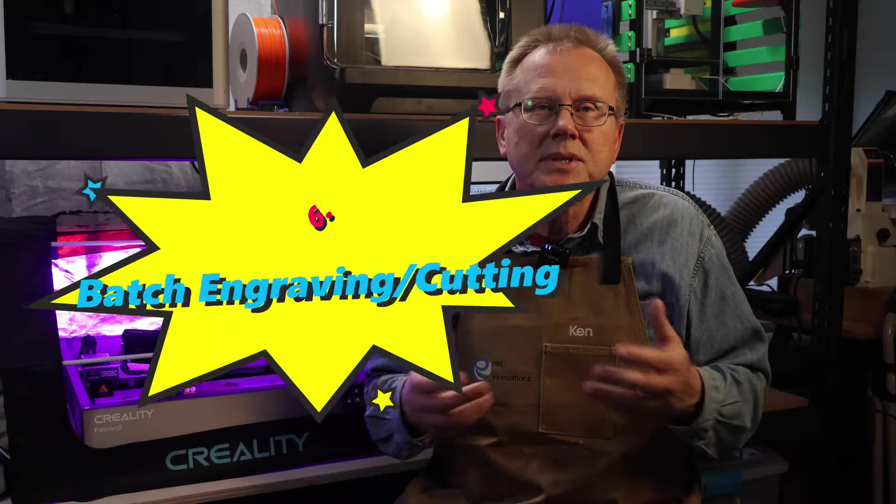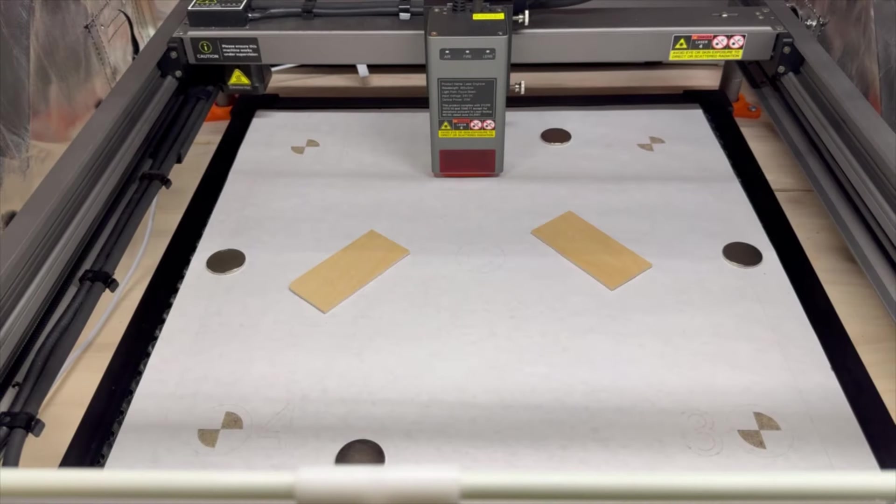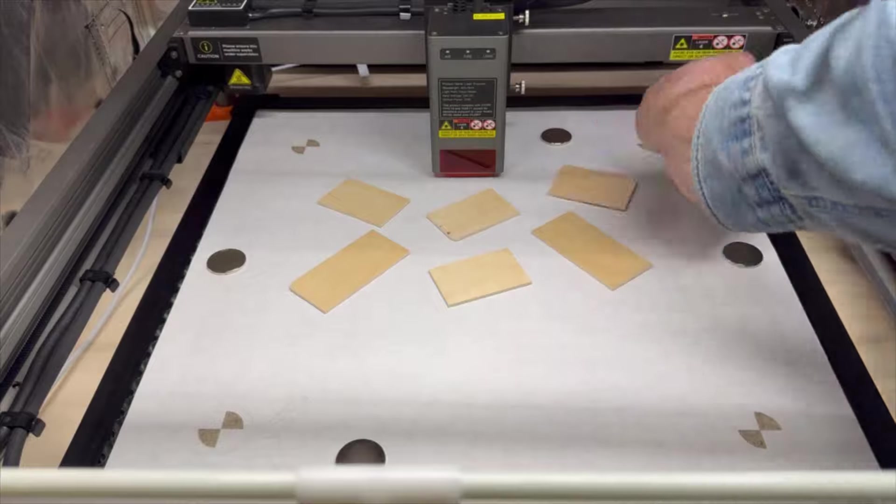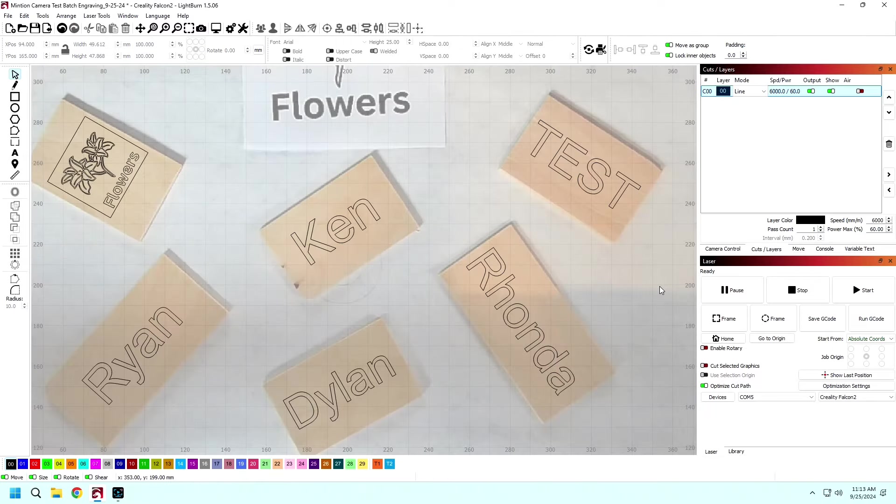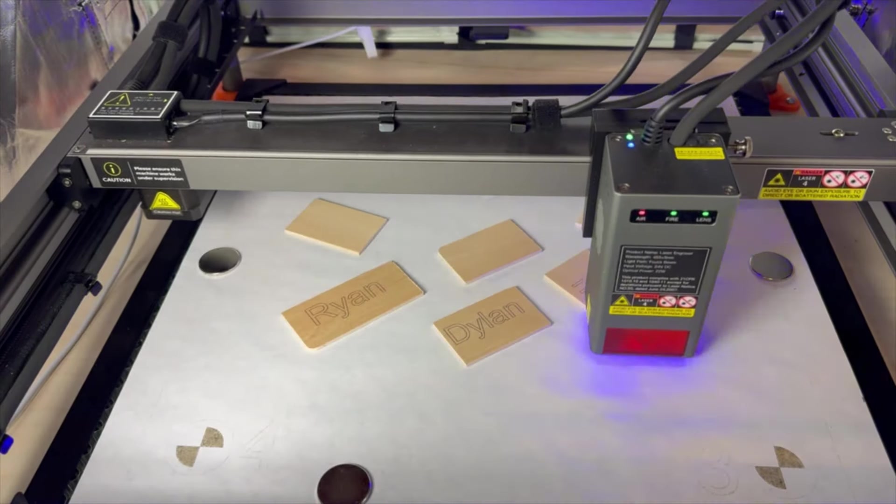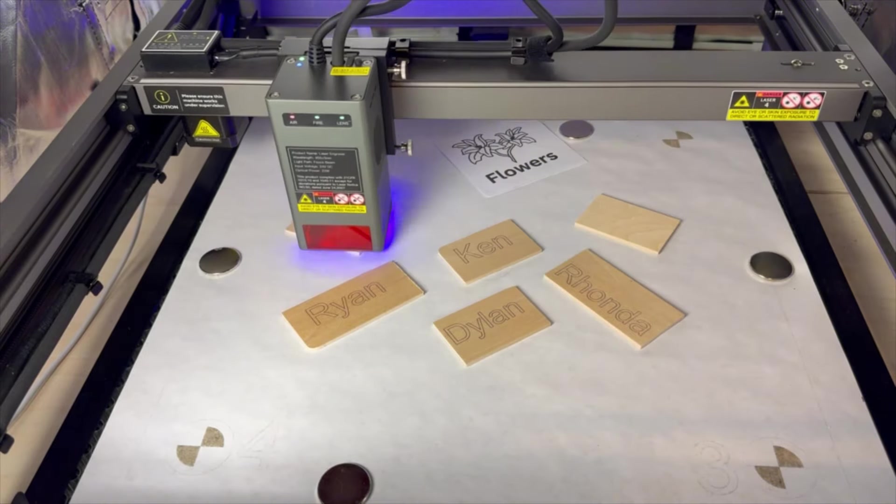Another productivity enhancement is the batch engraving or cutting feature. You can place multiple workpieces onto the work area of the laser. Then, using the Camera Control Update Overlay feature, you can place all your images on your workpieces and hit the Start button and all the workpieces will be engraved at the same time. This will really save you time and increase your productivity.